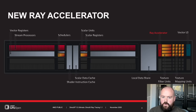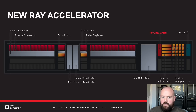RDNA 2 GPUs have hardware acceleration of ray tracing via a new block which we call the ray accelerator, or RA. Each work group processor, or WGP, which is the core of our RDNA 2 shader engine, has two RAs. Each RA can independently perform ray-box and ray-triangle intersection testing to help accelerate ray traversal as you fire rays into the acceleration structure. With up to 80 RAs in the biggest RDNA 2 based GPU, each one works in concert with the rest of the work group processor hardware to implement our traversal system and add ray tracing acceleration to our GPUs.